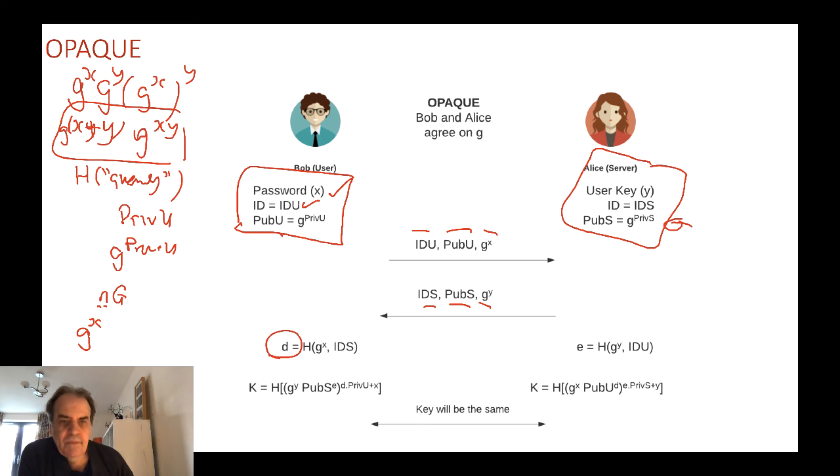Now Bob creates a value of D which is a hash of G to the power of X and also the server name that Alice has provided. On the other end Alice calculates E which is her G to the power of Y and takes Bob's identity and hashes them together.